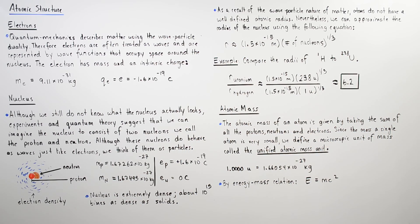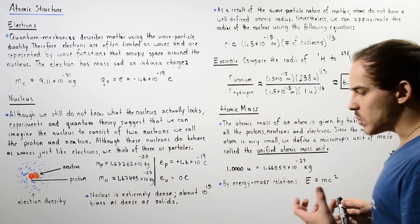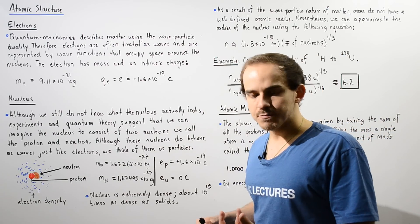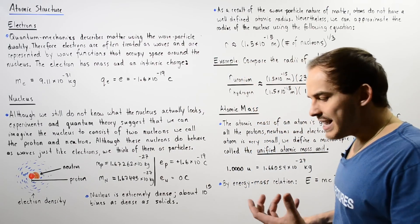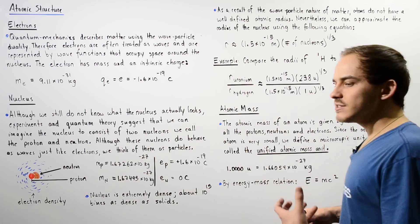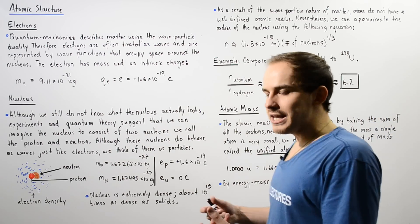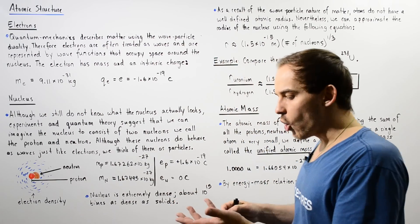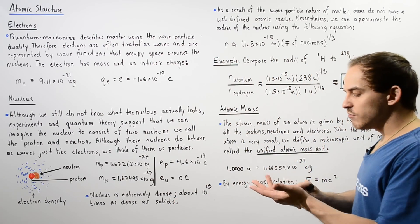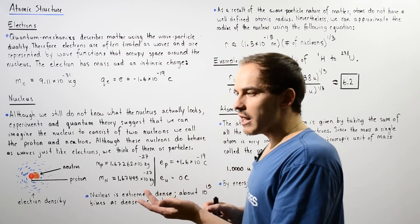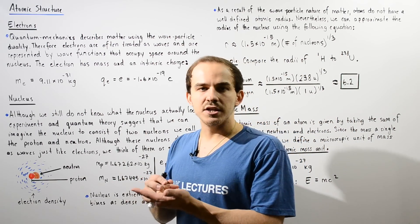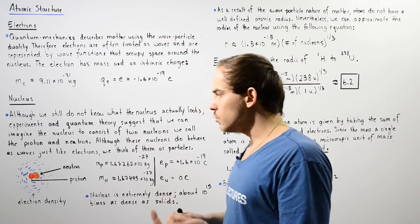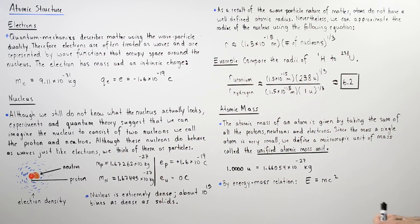In this final section, we're going to discuss the atomic mass. Any element, any atom, has a certain unique value of mass. So if we know the number of protons, the number of electrons, and the number of neutrons, we can calculate what the atomic mass is. The atomic mass of an atom is given by taking the sum of the masses of the protons, neutrons, and electrons.